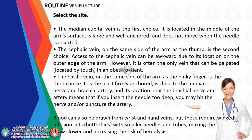The basilic vein, on the same side of the arm as the pinky finger, is the third choice. It is the least firmly anchored, is close to the median nerve and brachial artery, and if the needle is inserted too deep, you may hit the nerve and/or puncture the artery. Blood can also be drawn from wrist and hand veins, but these require winged infusion sets (butterflies) with smaller needles and tubes, making the draw slower and increasing the risk of hemolysis.